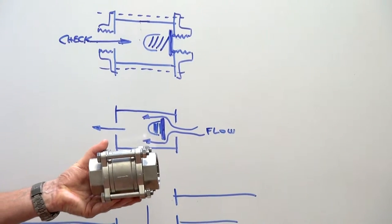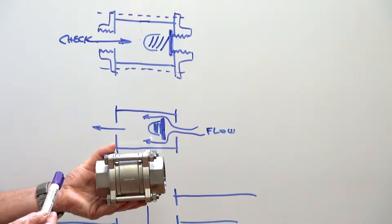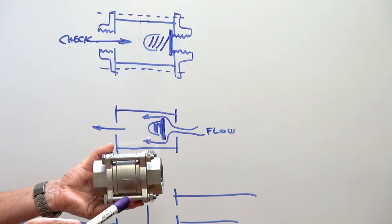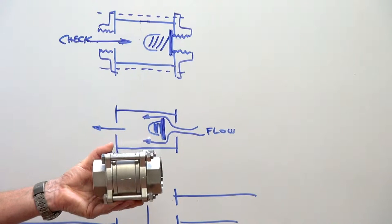A big advantage of this type of valve is that it can be put into a line, and then if you need it for maintenance, undo the four tie bolts and drop the center cartridge out.